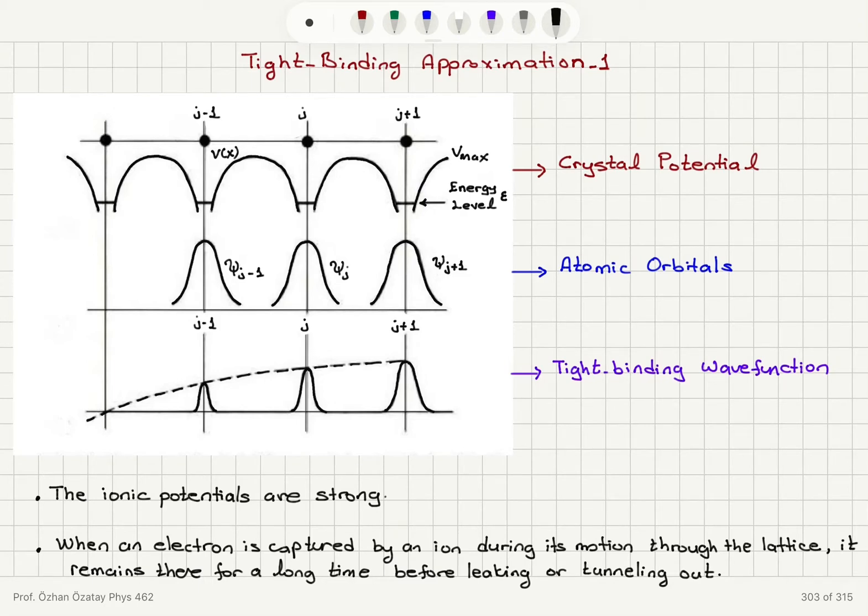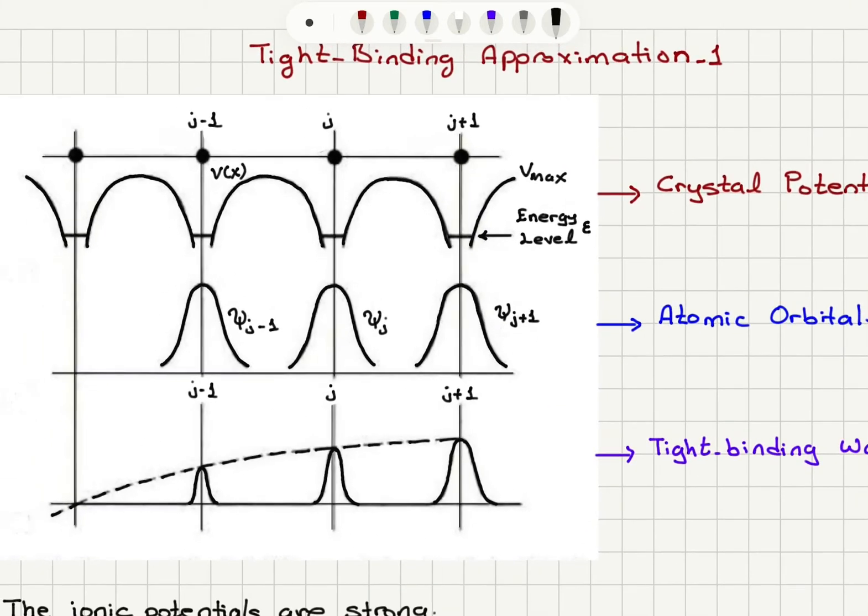So now we have a periodic crystal potential as you can see here. This is the electron potential. The potential well is centered around each ion at locations Rj, Rj minus 1, Rj plus 1, etc.